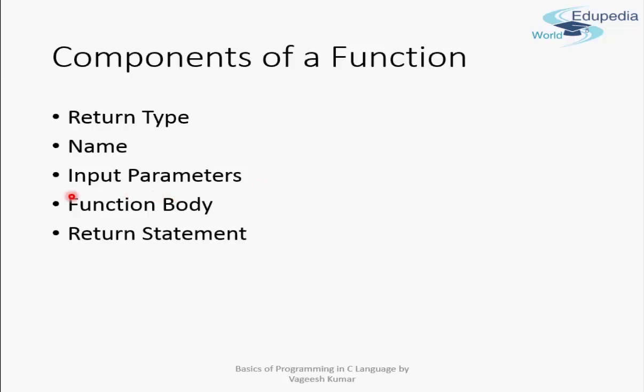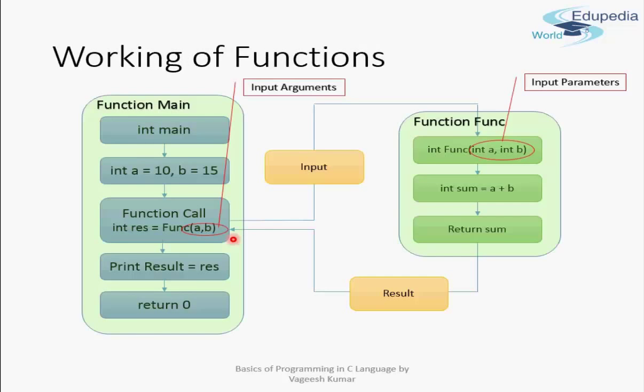Another main component of a function is the function body — this is where your executable statements lie. It is the set of statements that compose your function. At the end, the function has a return statement, which tells the compiler what value will be returned. The return statement gives the output of the function — you have input, processing in the body, and output via the return statement.